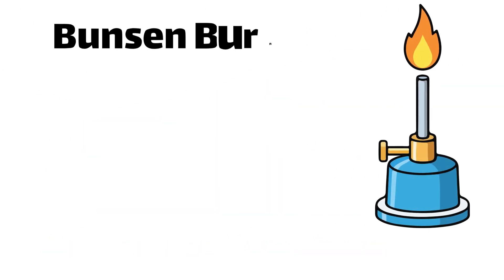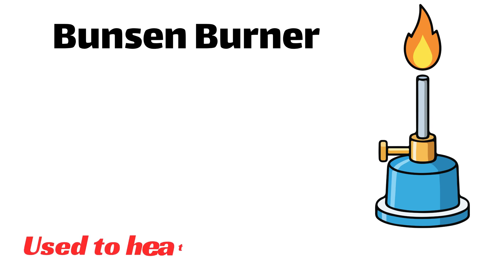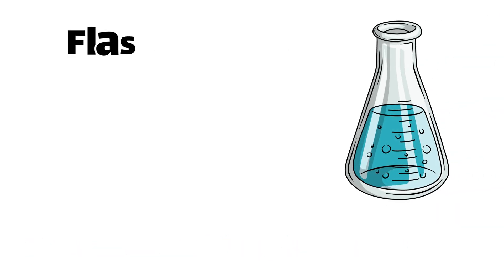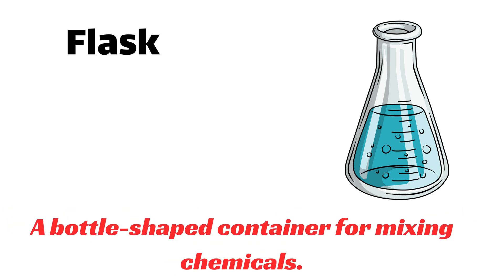Bunsen burner — used to heat things in the lab. Flask — a bottle-shaped container for mixing chemicals.